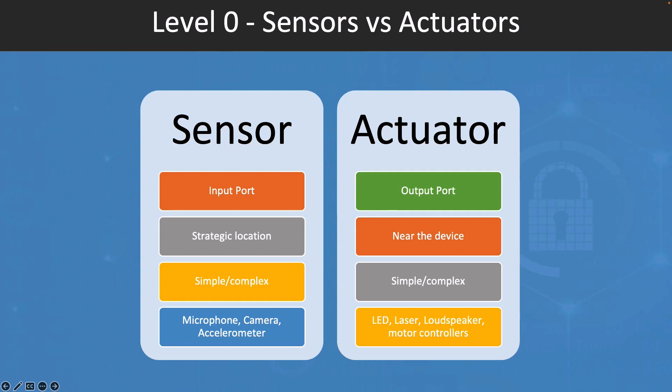From the response time perspective, sensors generally have a faster response time than actuators, since they need to detect and measure changes in physical properties in real-time, while actuators may require a certain amount of time to respond to commands from the control system and perform physical action.